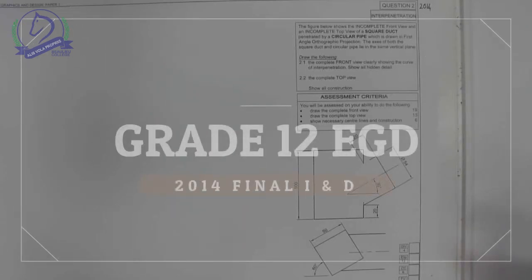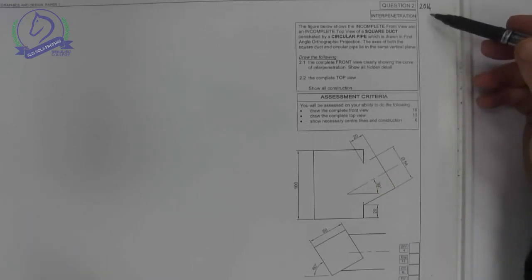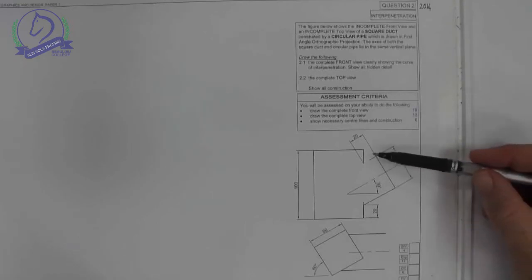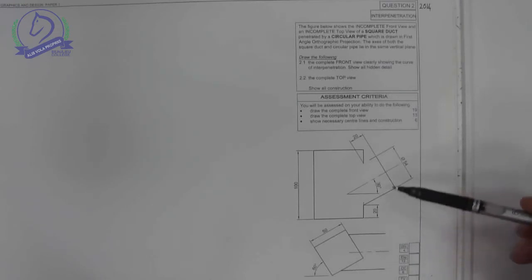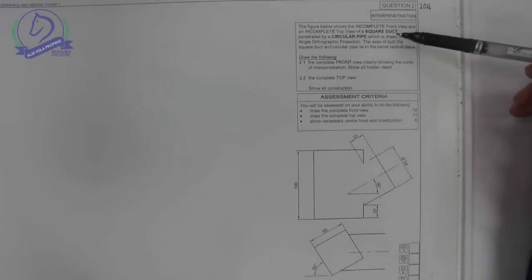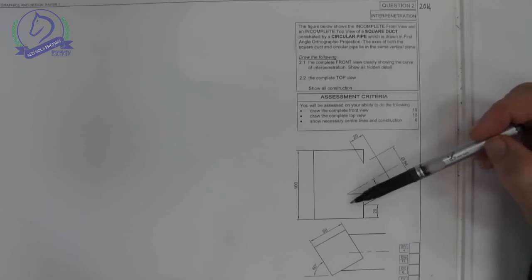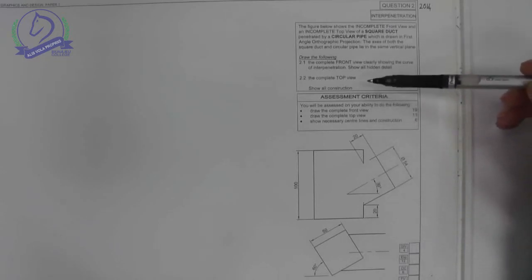Hello Grade 12s. Today I'm looking at question 2, the interpenetration and development question from the 2014 paper. The given information is the incomplete front view - incomplete because it doesn't show what the interpenetration looks like - and an incomplete top view. This is a circle, which means we're going to have an ellipse. They've asked you to complete the front view, so obviously they want the interpenetration curve, complete the top view for the ellipse, and that's all they've asked you to do.